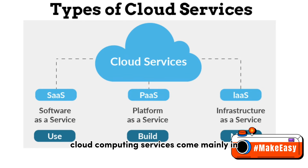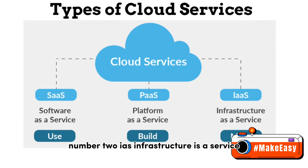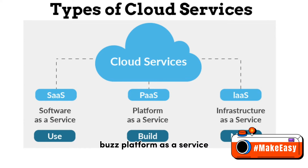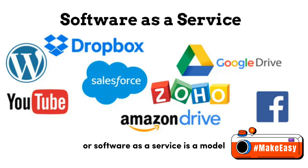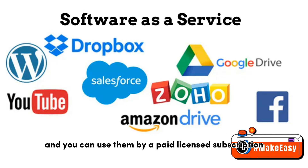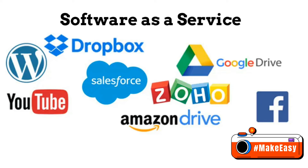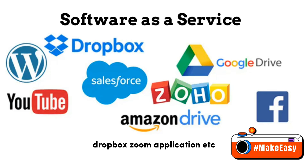Cloud computing services come mainly in three types of service models. Number 1: SaaS — Software as a Service. This is a model that gives quick access to cloud-based web applications. The vendor controls the entire computing stack, which you access using a web browser. These applications run on the cloud and you can use them by paid licensed subscription or for free with limited access. Examples include Google G Suite, Microsoft Office 365, Dropbox, and Zoom.